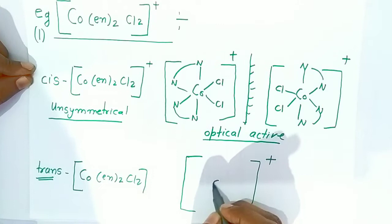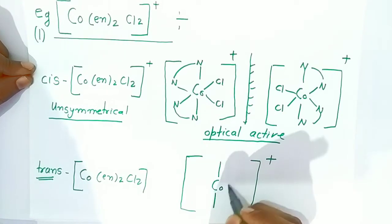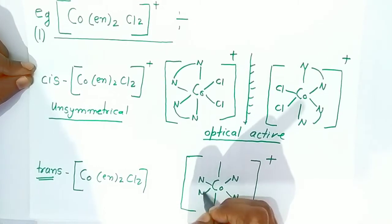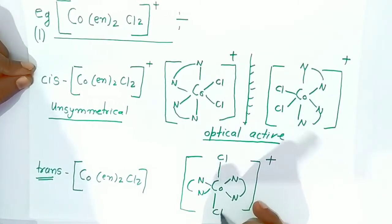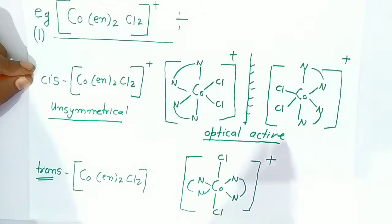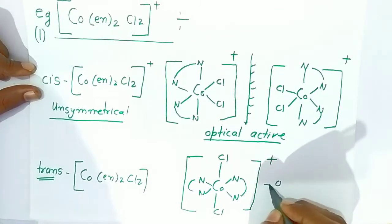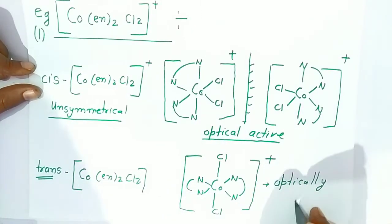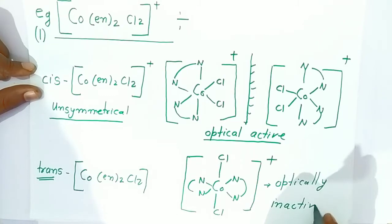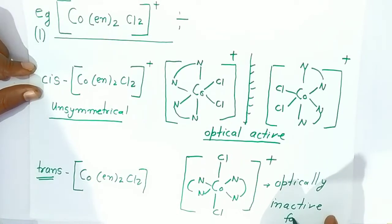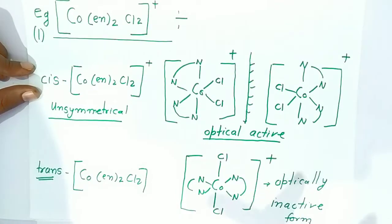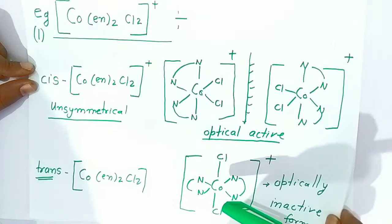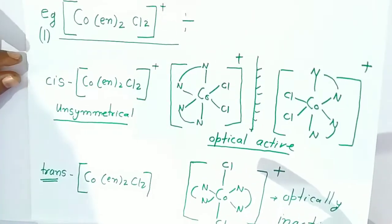For the trans cobalt complex, the two ethylene diamine ligands are placed trans to each other, with one chloride above and one chloride below. This trans form is optically inactive - it will not rotate plane-polarized light. The trans isomer is optically inactive, whereas the two cis isomers will rotate the light and are therefore called optically active compounds.